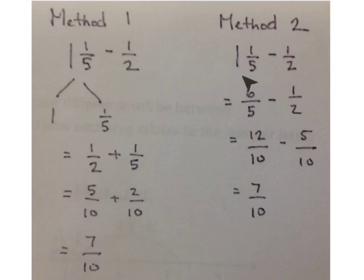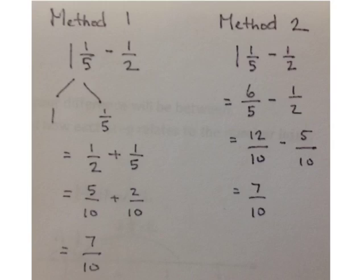The other method is to change our mixed number into an improper fraction. 1 and 1 fifth is 5 fifths plus 1 more fifth, or 6 fifths. We have minus 1 half. Get the common unit of 10: multiply by 2 halves and multiply by 5 fifths to get 12 tenths. Take away 5 tenths is 7 tenths.